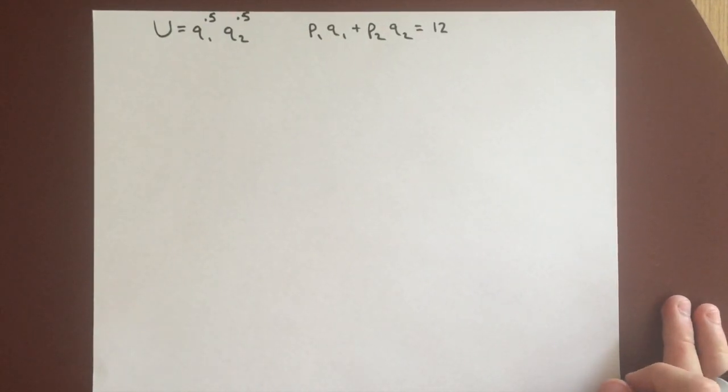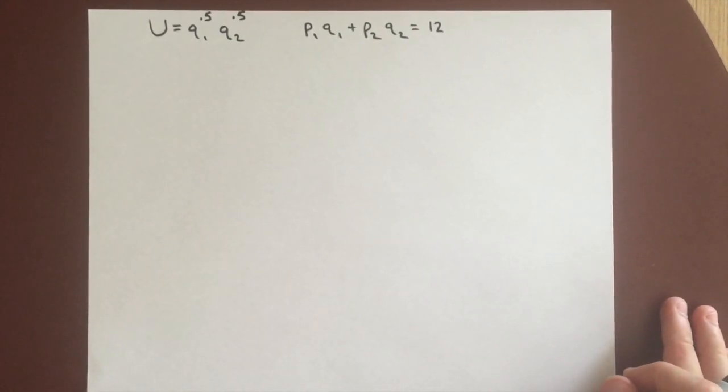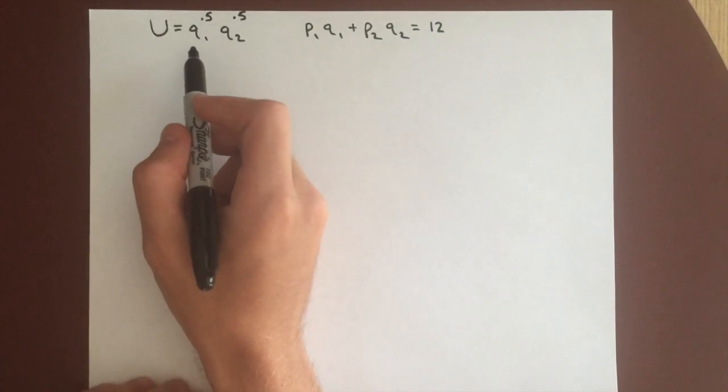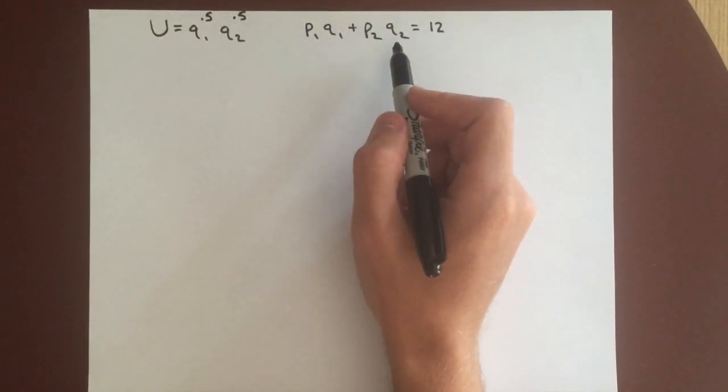Okay, so in this video we're going to derive a demand curve when we have a Cobb-Douglas utility function and a budget constraint.